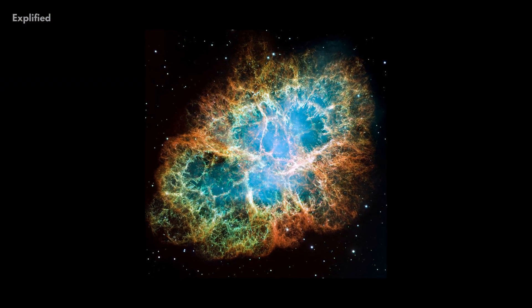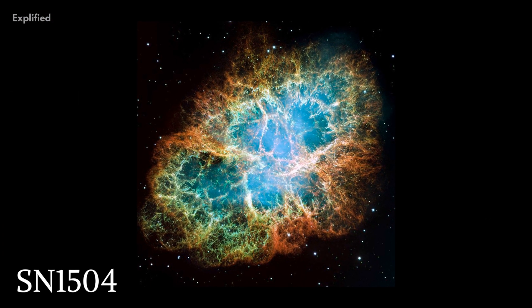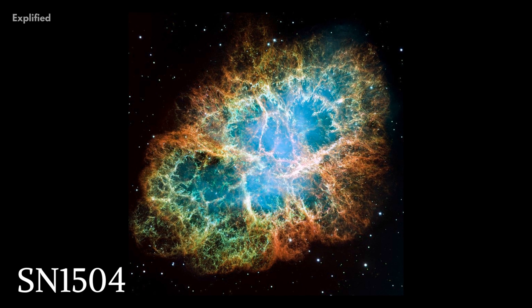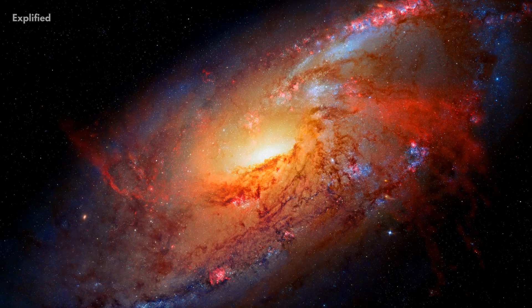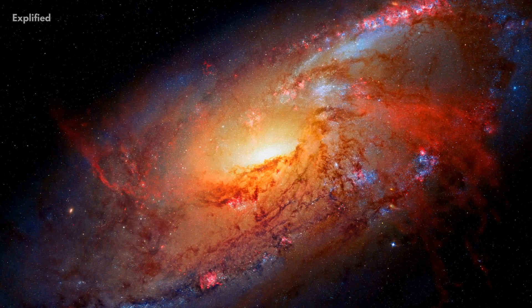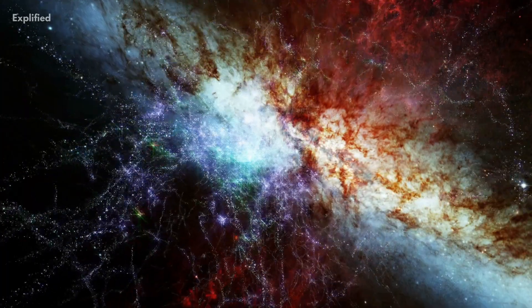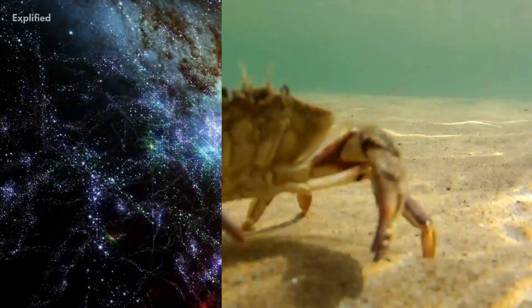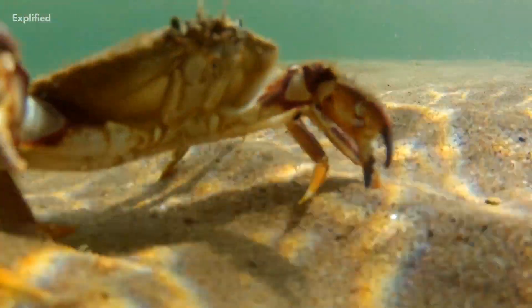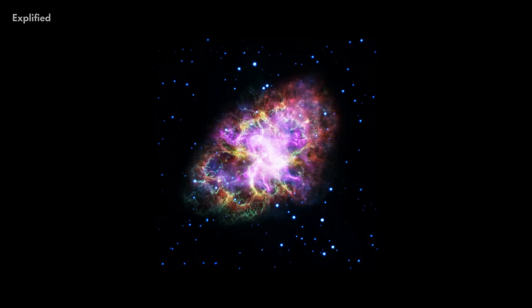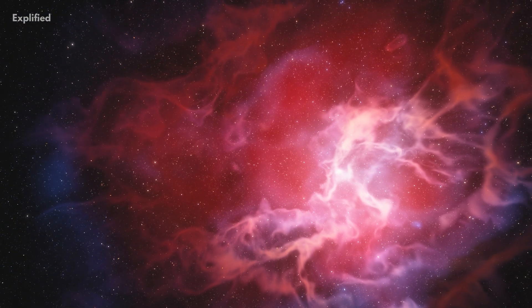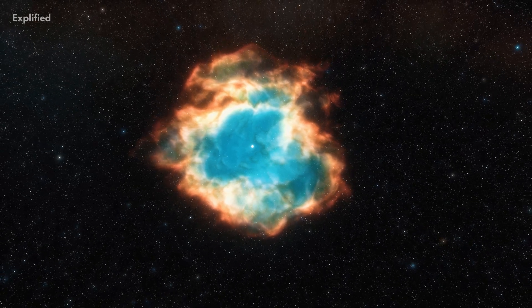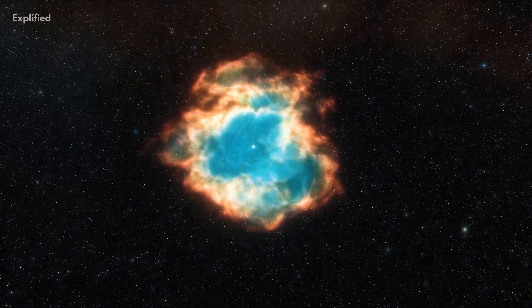The most famous supernova to date has been the SN 1504. It is notable as it created the Crab Nebula, which is known to be the first astronomical phenomenon that we realized was connected to supernova explosions. It is a filament-like structure that resembles a crab, hence the name Crab Nebula. This supernova exploded back in 1504 AD and is said to have been visible for 23 days straight during the daytime.